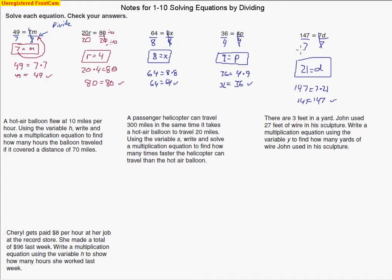We've got some word problems here that we're going to try to write an equation and then solve. It talks about how a hot air balloon flew at 10 miles per hour. Whenever you see the words per hour, it just flies at 10 miles in one hour. But after two hours, you have to double this. So after two hours, 2 times 10 would be 20 miles it flew. After three hours, it would be 30 miles. It says using the variable h, write and solve a multiplication equation to find how many hours. Okay, there's the question. That tells us what h is supposed to be. h equals the number of hours. The balloon traveled to cover a distance of 70 miles.